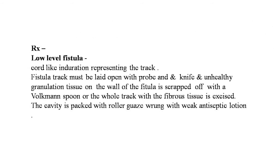Treatment of low-level fistula: the fistula tract must be laid open. The patient is placed in the lithotomy position. Bimanual examination under anesthesia reveals the cord-like induration representing the tract. The fistula tract is laid open with probe and knife, and unhealthy granulation tissue on the wall is scraped off with a Volkmann spoon, or the whole tract with fibrous tissue is excised. The cavity is packed with a roller gauze wrung with weak antiseptic lotion.